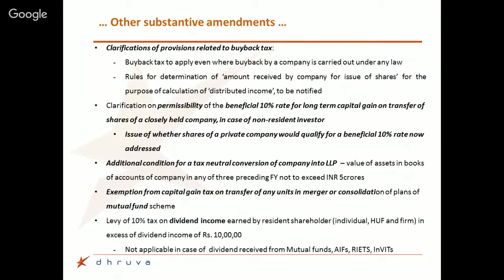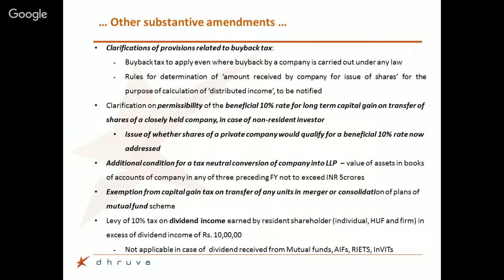There is a clarification in the provisions relating to buyback tax. The erstwhile provisions applied buyback tax only for buybacks under Section 77A of the Companies Act 1956, but we already have the Companies Act 2013 in place. The new provisions extend buyback tax to cover buybacks under any company law as far as it relates to unlisted companies, which would also mean that a buyback done under a scheme — such as a court scheme — would now qualify for buyback tax.